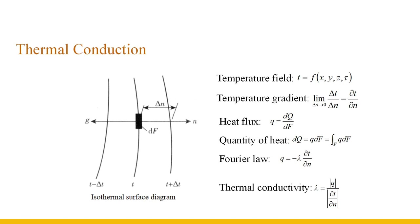Thermal conduction follows Fourier's law: the heat flux at each point inside a homogeneous object is proportional to the temperature gradient. Lambda in the formula is the thermal conductivity, which is always a positive value. The negative sign indicates that heat transfer can only be carried out in the direction of decreasing temperature. If temperature increases along the n-direction and the temperature gradient is positive, then q is a negative value.